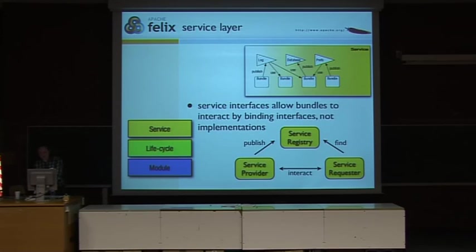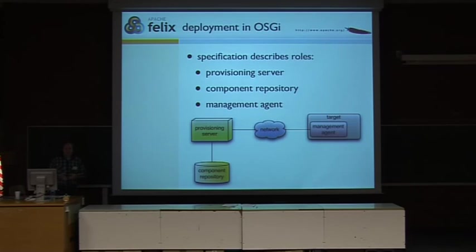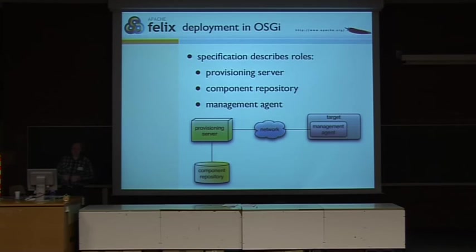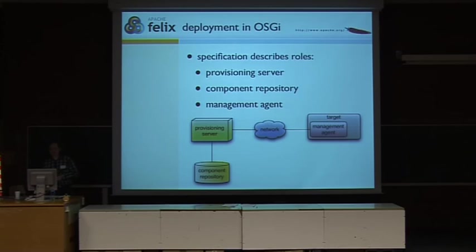That's basically the OSGI framework itself. Now, on to deployment. If you look at the specification and what it describes about deployment, it actually only specifies a couple of very generic roles. You have this management agent, which is just a bundle that you install into your framework, and it is responsible for installing and updating components. It talks over the network to some provisioning server, which has some component repository where you can get new stuff from. That was basically all that was defined about how to do deployment — until the last version of the specification, 4.1.